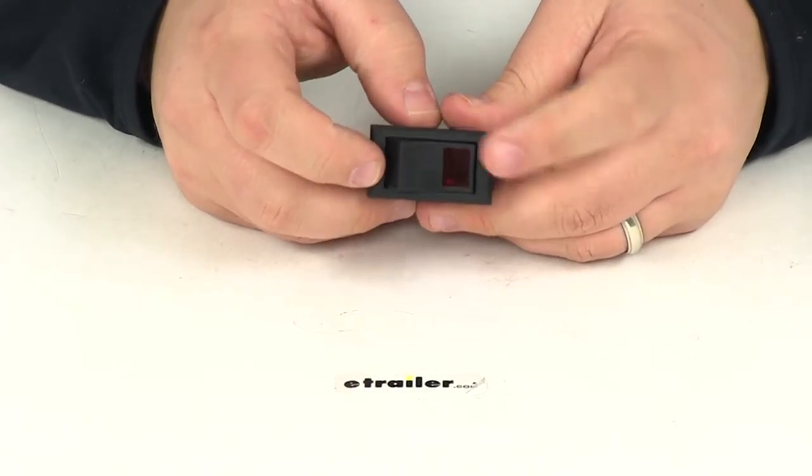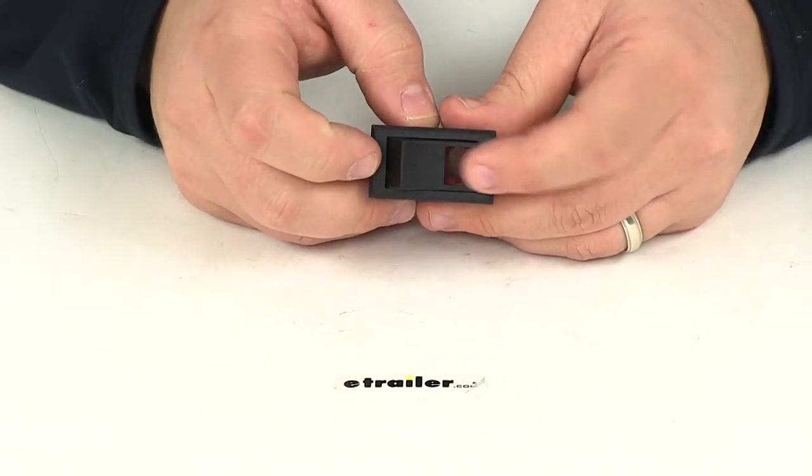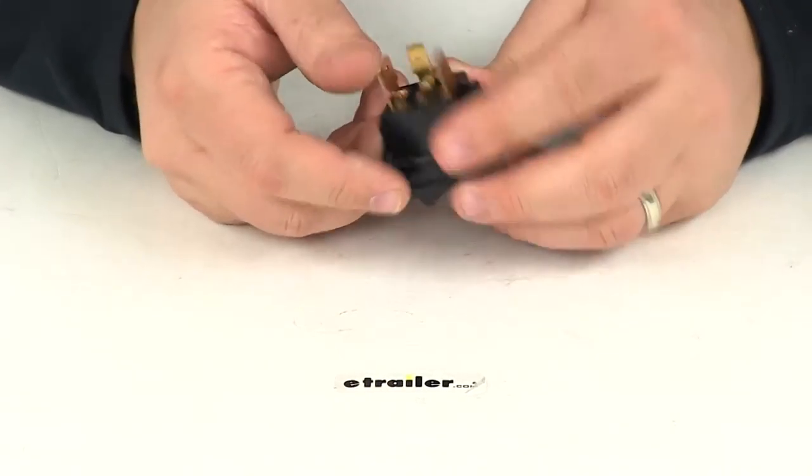When it comes to DC volts, that's 12 volts. DC amps is 20 amps. The width of the terminals measures a quarter of an inch wide. Again, it has on and off circuitry.